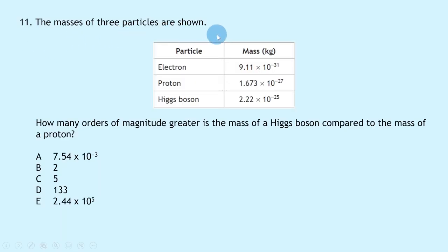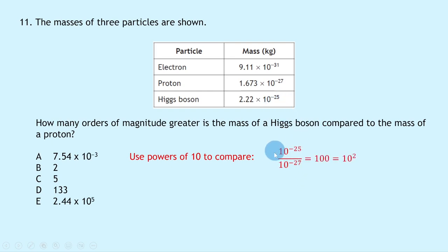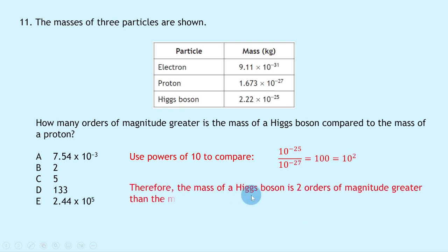Question 11: Masses given — electron 9.11 × 10⁻³¹ kg, proton 1.673 × 10⁻²⁷ kg, Higgs boson 2.22 × 10⁻²⁵ kg. To find how many orders of magnitude greater the Higgs boson mass is compared to the proton, compare powers of 10: 10⁻²⁵ / 10⁻²⁷ = 100 = 10². The Higgs boson is 2 orders of magnitude greater than the proton — answer B.